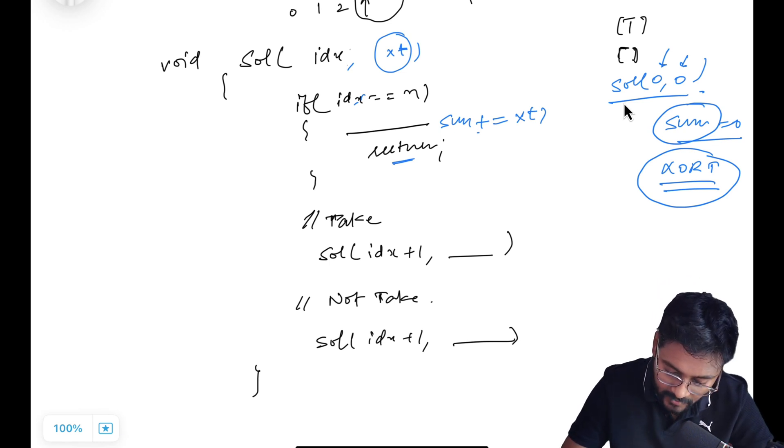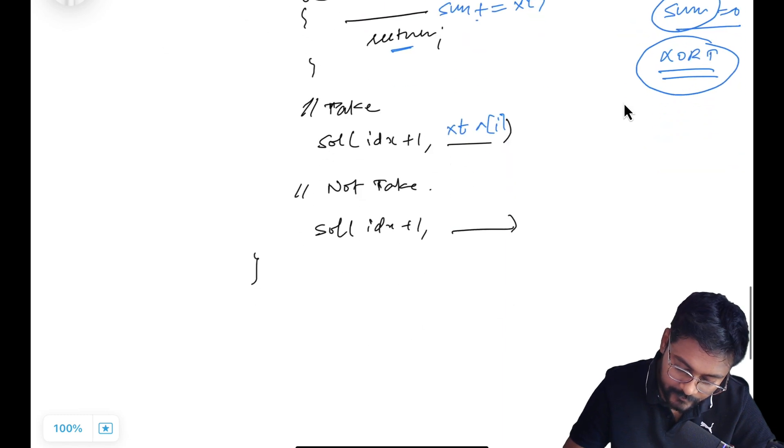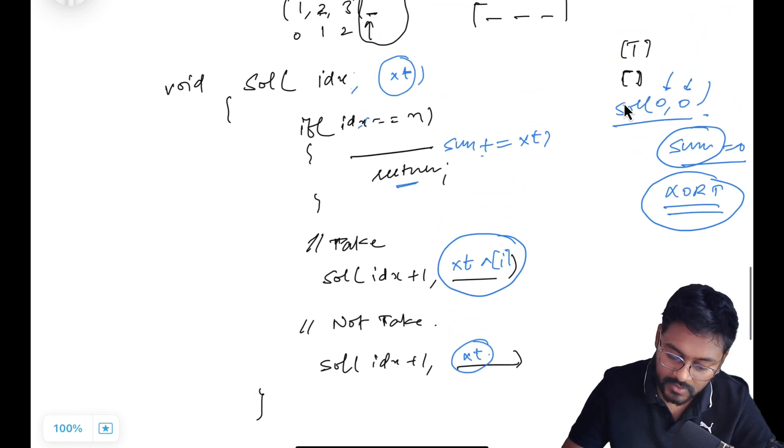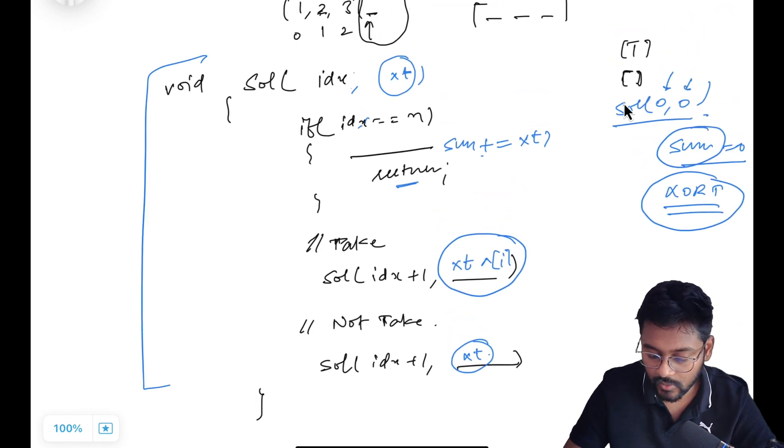And now if I am taking it, whatever is the XOR total I was getting from the previous calls, take XOR with current element. And do not take it means whatever is the XOR total, just carry forward that. Just forward that. So this is going to be our code.